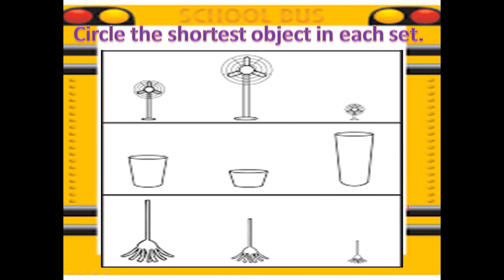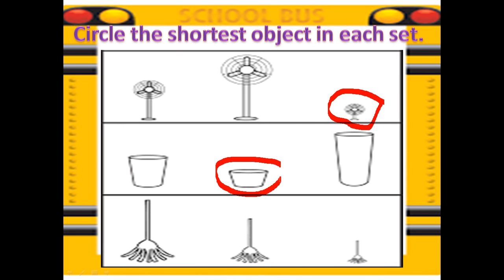Now I'm giving you three sets of objects, and I want you to circle the shortest object in each set. First, a set of fans — which object is the shortest? One, two, three, point. Well done, KGs — this is the shortest fan. Next, which is the shortest cup? Well done. The last one — which is the shortest mop or broom? One, two, three. Well done, KGs — I know you nailed it.